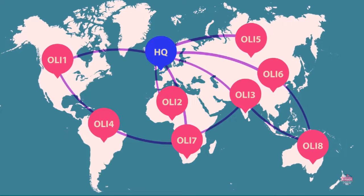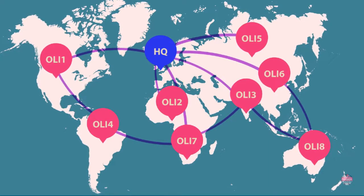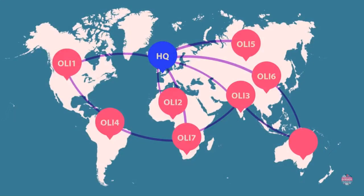As we can see, there are a lot of different OLIs on our map. This illustration shows us that with time, multinationals invest in different locations, and every single investment is unique. It consists of a unique set of OLI advantages. For instance, OLI 1 is very different from OLI 8 or OLI 3. They are all unique. The combination of these OLI advantages is unique for every single investment.